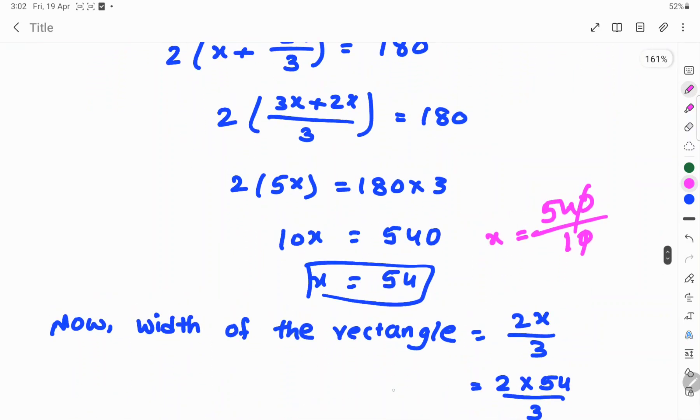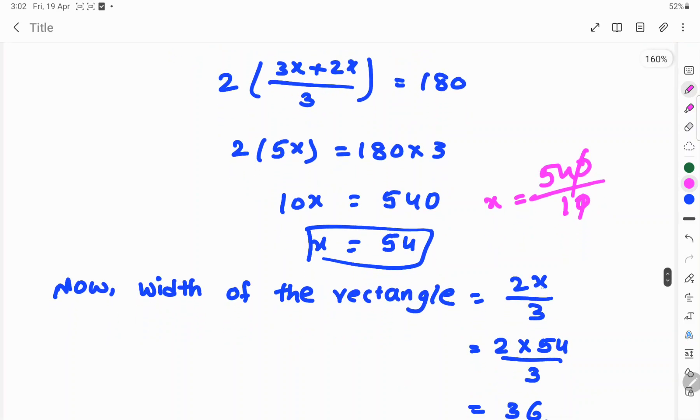Now, width of the rectangle is equal to 2x by 3. So, 2 into 54, x value is 54, 54 by 3.